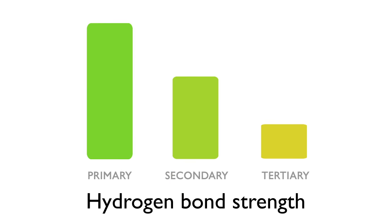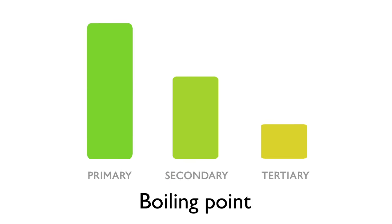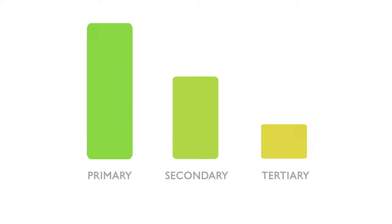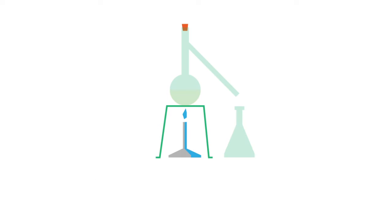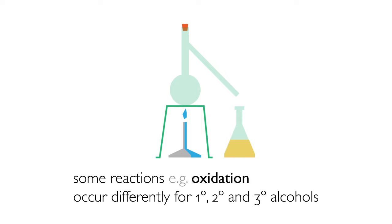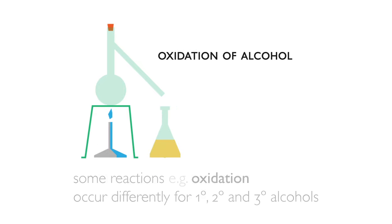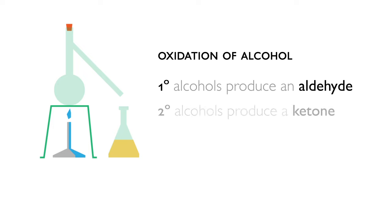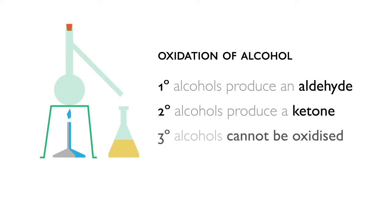It is important to categorise an alcohol as they have slightly different chemical properties. A good example of this, that you could look into as further reading, would be the oxidation of alcohols, with different reactions occurring for primary, secondary and tertiary alcohols.